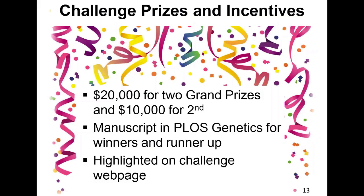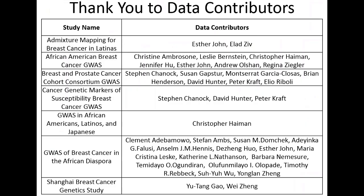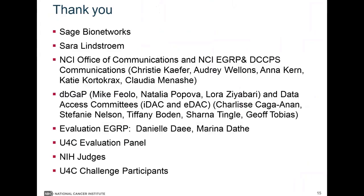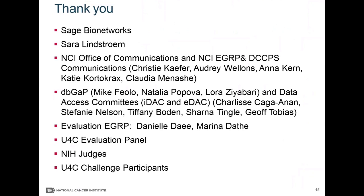The two grand prize winners won $20,000, and the second place team won $10,000. Top scorers were invited to prepare manuscripts in PLOS Genetics, which are currently under review, and they were highlighted on NCI webpages. I have to thank the data contributors, the study participants, and the many people involved in the administration of this competition. This challenge shows opportunities to better leverage existing data to develop new methods and find new findings, but none of this would have been possible without dbGaP and the Data Access Committees.